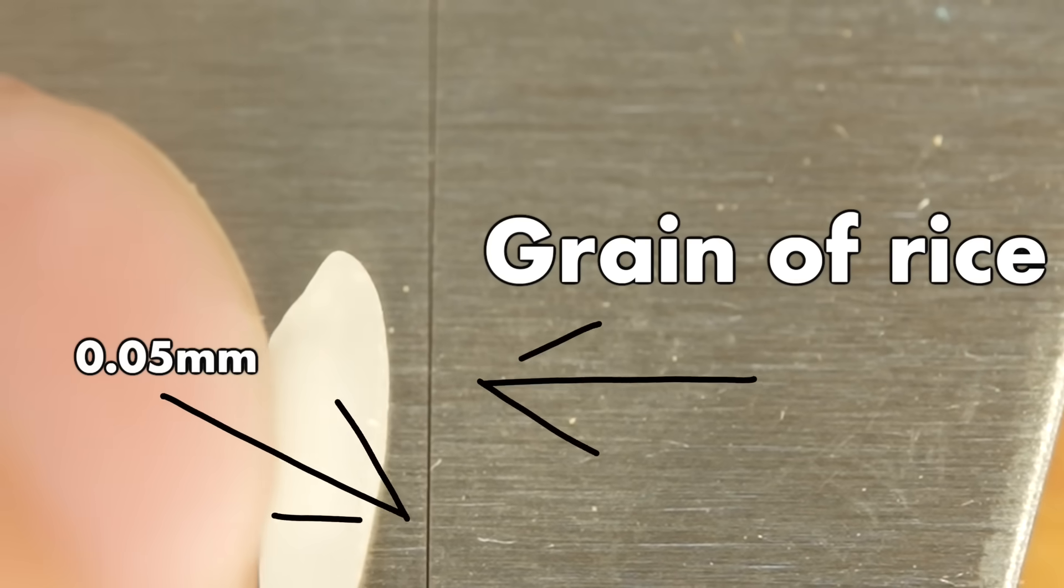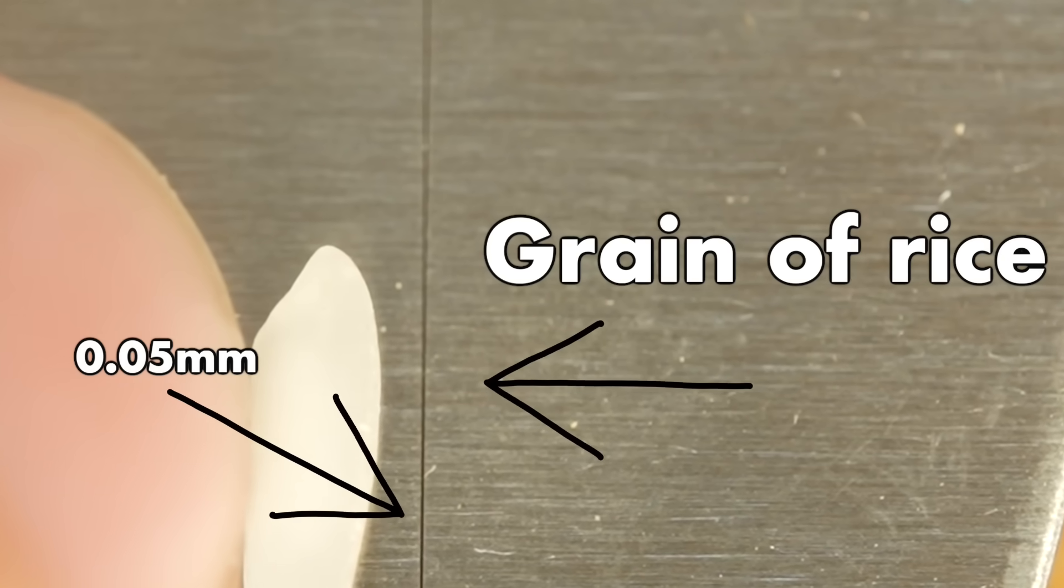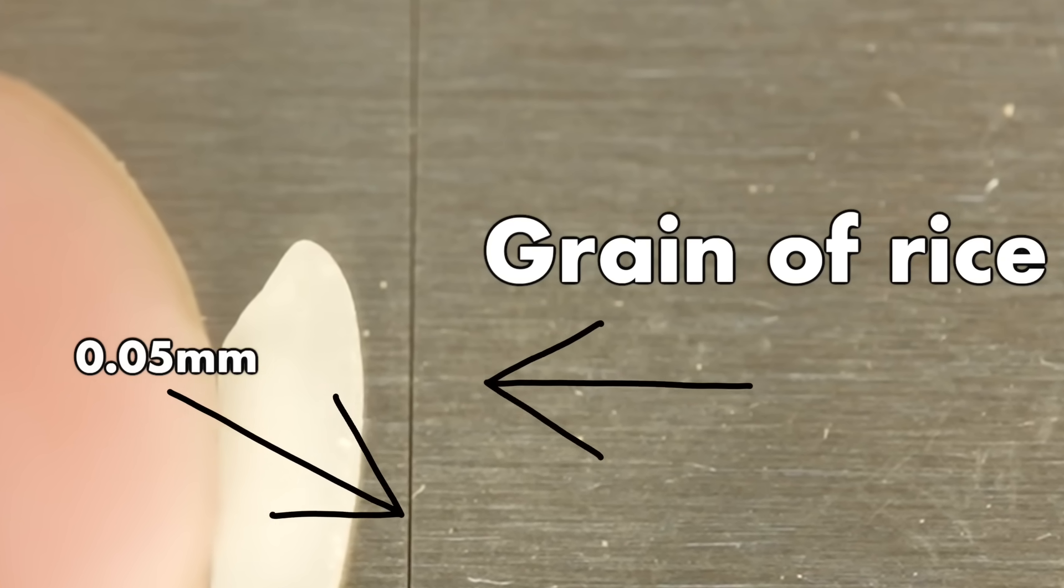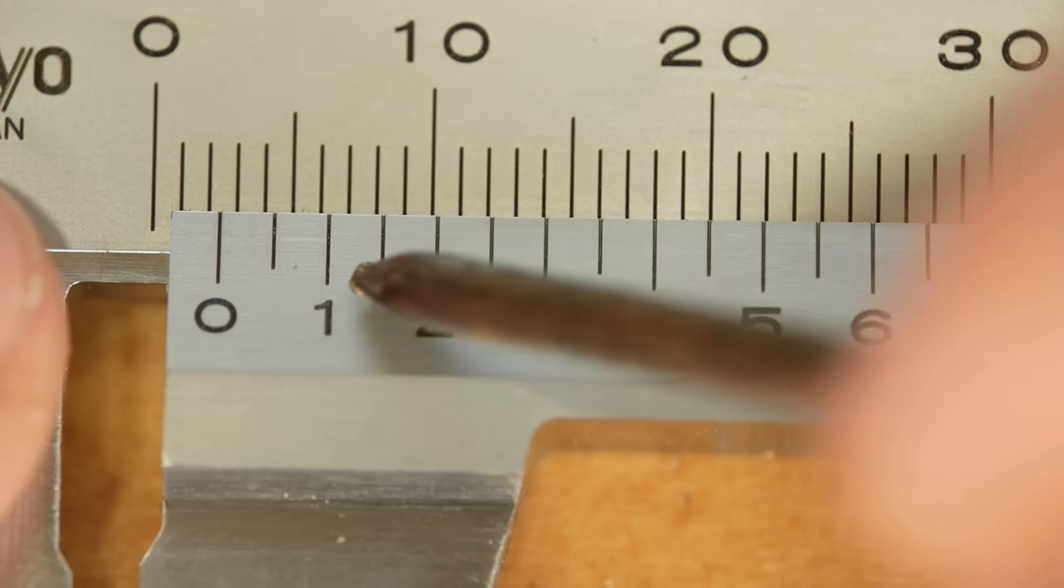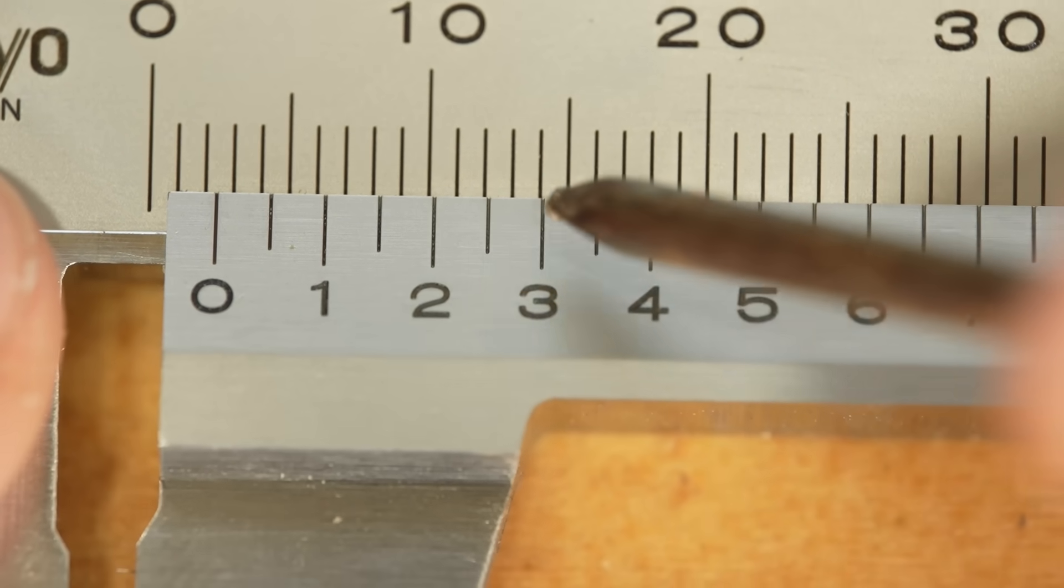Under a microscope at 40 times magnification, we could hardly make out that space. So yes, vernier calipers are extremely accurate, though they require a little bit of extra work to read.